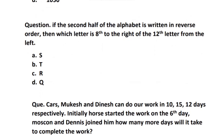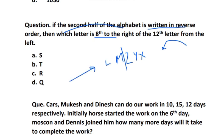Coming to the next question: If the second half of the alphabet is written in reverse order, that means after M you get Z, Y, X and so on. Now, which letter will be the eighth letter to the right of the twelfth letter from left? The twelfth letter from the left is L. Now the eighth letter to the right of L in the reversed second half - counting first, second, third, fourth... through to the eighth - the answer will be T. Option B is the correct answer.